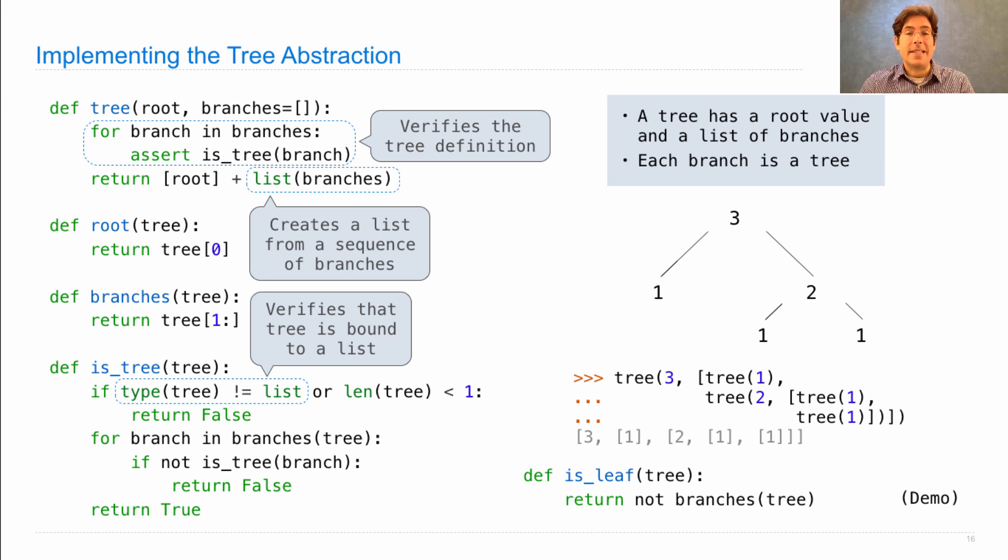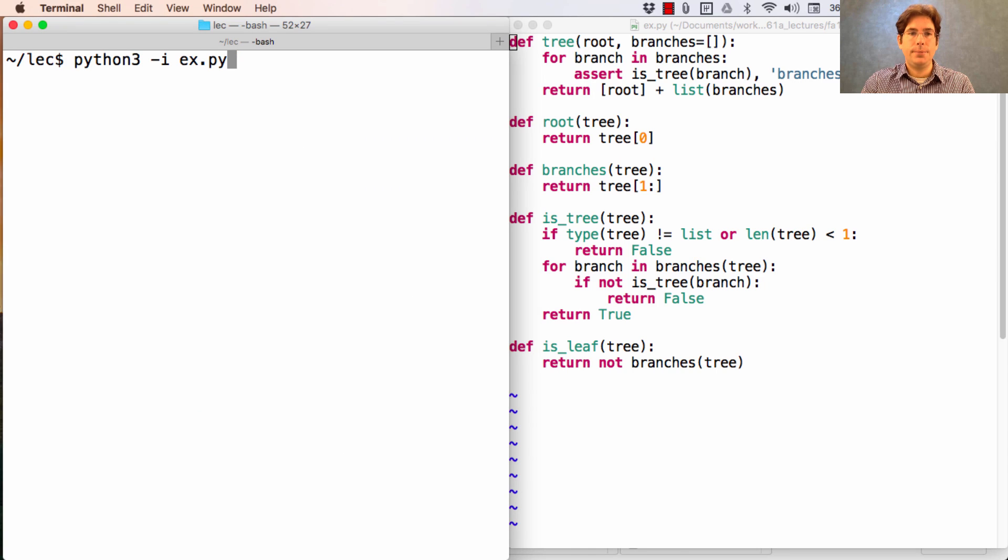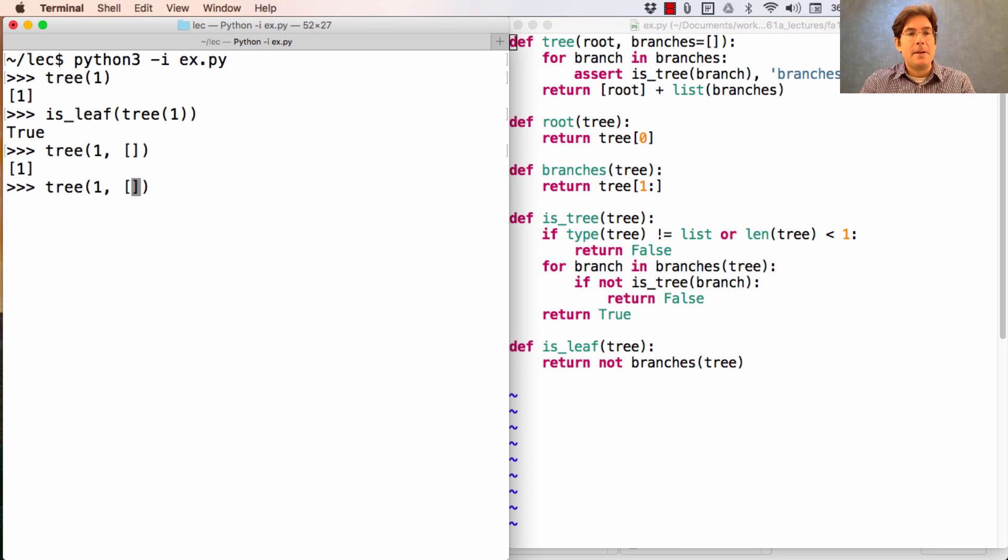Let's see how we can use this data abstraction in practice. I'm going to load it in and then start building trees. I can build a tree that's just a leaf. And if I ask, is that a leaf? It will tell me it is. In order to build a tree that's not a leaf, I have to give it a list of branches as well. And if this branch is empty, I get my leaf back. But if instead I say I have a tree and then another tree as my two branches, then I have a tree with three nodes. The values are 1, 5, and 6. And they appear in the representation in this nested structure.